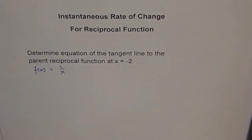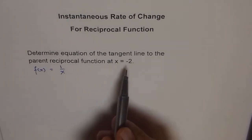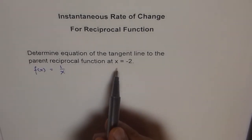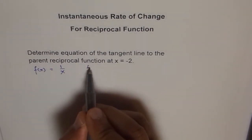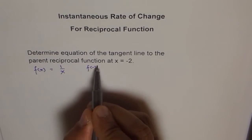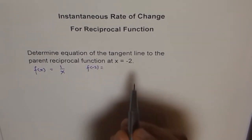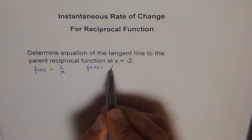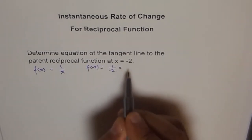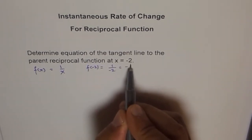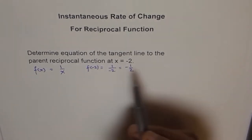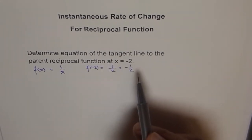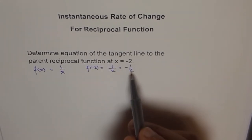If you are given x equals minus 2, what is the value of the function? We can write f of minus 2 equals 1 over minus 2, which is minus 1 over 2. So at x equals minus 2, the y value is minus 1 over 2.